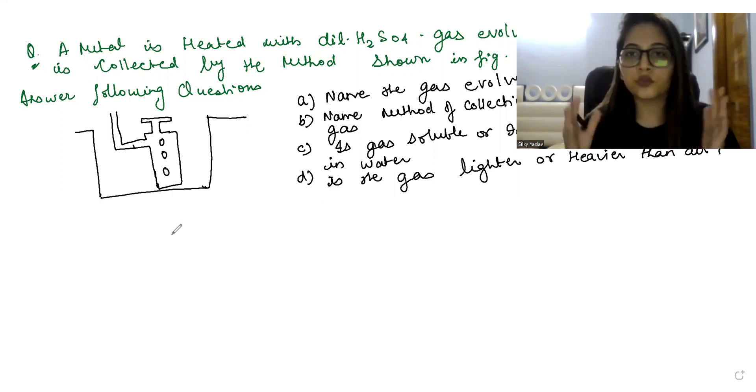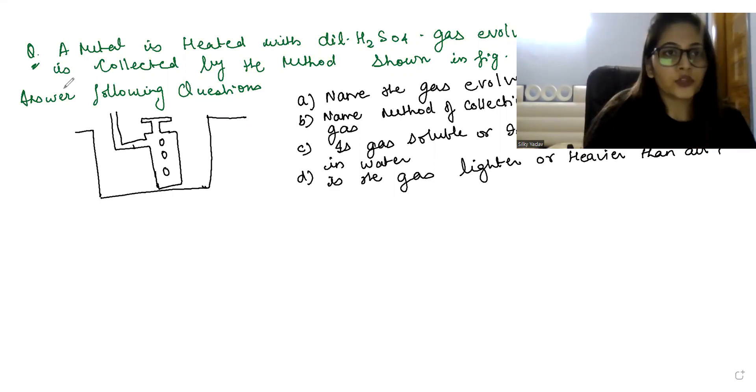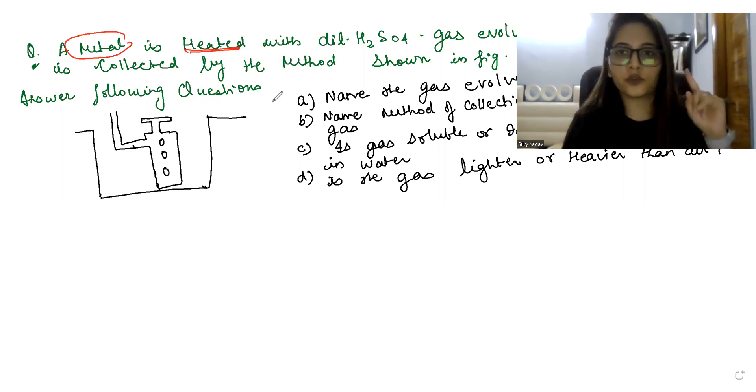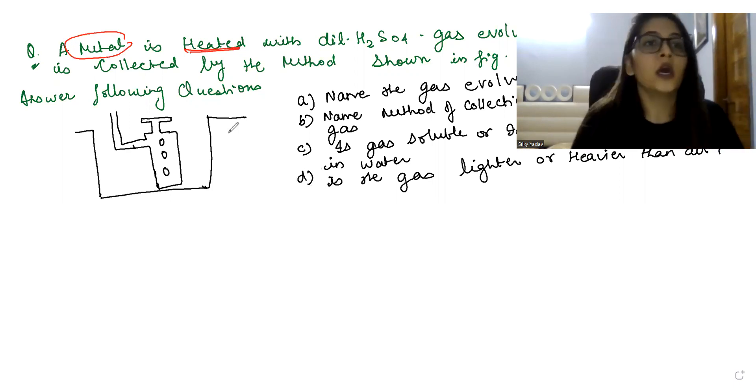The question is: a metal is heated with dilute H2SO4. We're taking a metal and heating it with dilute H2SO4. Now see, the question is saying we're having a metal and we are placing it in one acid.